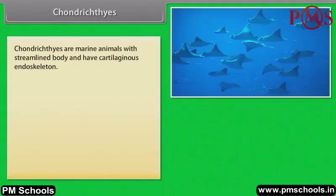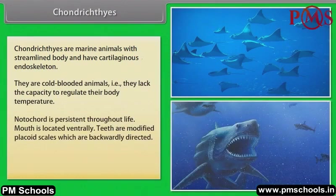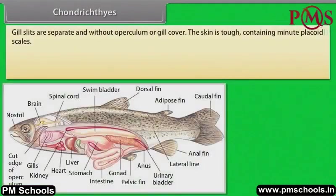Chondrichthyes. Chondrichthyes are marine animals with a streamlined body and have a cartilaginous endoskeleton. They are cold-blooded animals, that is, they lack the capacity to regulate their body temperature. Notochord is persistent throughout life. Mouth is located ventrally. Teeth are modified placoid scales, which are backwardly directed. Their jaws are very powerful. These animals are predaceous.